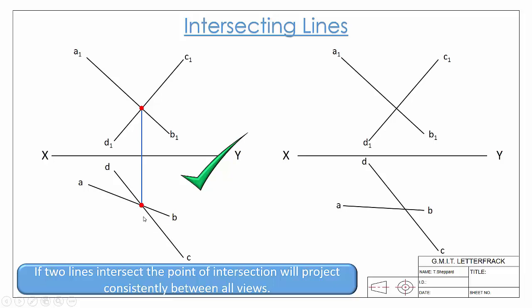If we look at our example over here and apply the same test, there's our point of intersection. When we project it down, it doesn't meet the point where they appear to cross here. So those two lines, even though they appear to cross, don't actually cross.